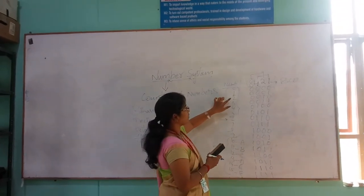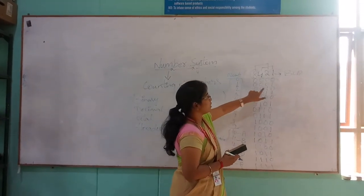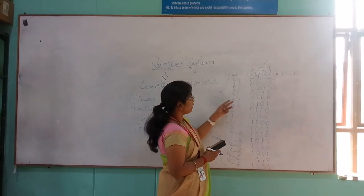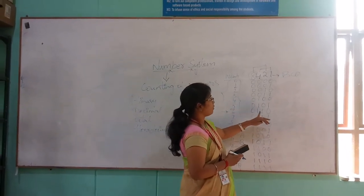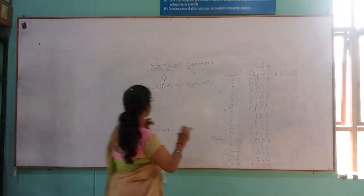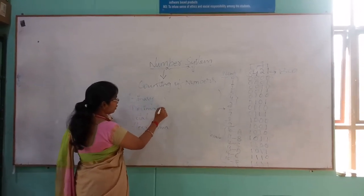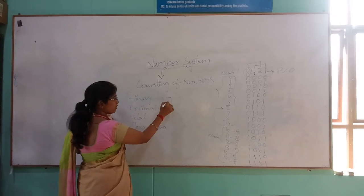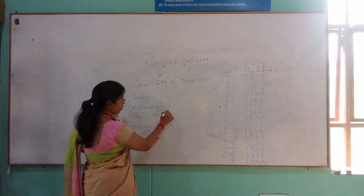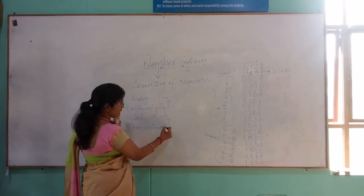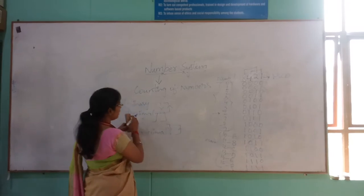So this is the BCD format of the number system for conversion of any number. For example, number 2 in binary format is 0, 1, 0. For number 4 it is 1, 0, 0. For number 6 it is 0, 1, 1, 0. We will check how to convert binary to decimal and decimal to binary, decimal to octal and octal to decimal, octal to hexadecimal and hexadecimal to octal.